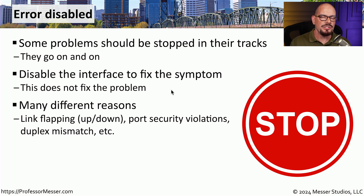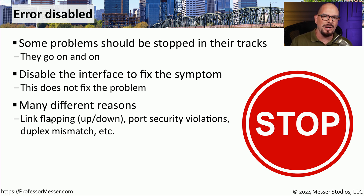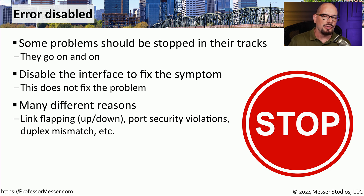You might see error disabled happen if an interface on a switch is flapping — meaning the interface goes up, then down, then up, then down. A switch might error disable that interface so it's no longer flapping and causing problems with spanning tree and other switch functions. Or we may be limiting how many devices can connect to a particular switch interface. If port security is configured and someone unplugs a device and plugs their own laptop in, the switch will go into an error disabled state for that interface. A configuration problem or an increase in the number of errors can also cause the interface to move into an error disabled state.